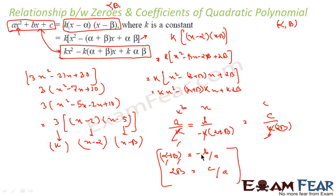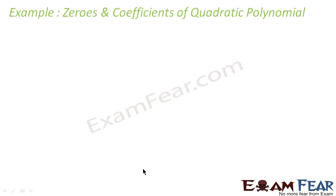Please make a note of this — this is a very useful relationship. α + β = −B/A and α·β = C/A, where α and β are zeros of the quadratic polynomial and A, B, C are the coefficients. Now we will take some examples.